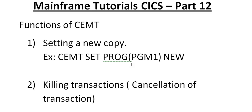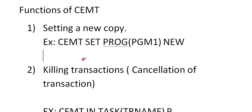The first function is setting a new copy. For example: CEMT SET PROGRAM PROGRAM1 NEW. Whenever you have a new program, you define it and install it. If you have done any modification to your programs, instead of defining them again, you can simply give CEMT SET PROGRAM a new copy — that's it. It defines internally, overwrites into the PPT table, and adds the load module to the online region.